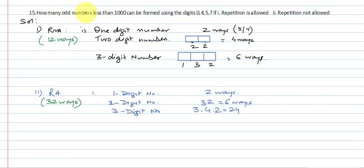Question number 15: How many odd numbers less than 1000 can be formed using the digits 0, 4, 5, 7 if repetition is allowed? And the second part is repetition is not allowed. So let's first look at repetition not allowed.